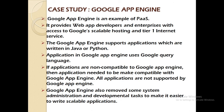Next is the case study of Google App Engine. Google App Engine is an example of platform as a service. It provides web app developers and enterprises with access to Google's scalable hosting and tier 1 internet service. Google App Engine supports applications written in Java or Python, and applications use Google Query Language. If applications are not compatible with Google App Engine, they need to be made compatible. Google App Engine also removed some system administration and developmental tasks to make it easier to write scalable applications.